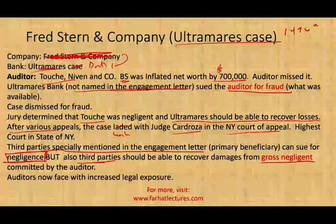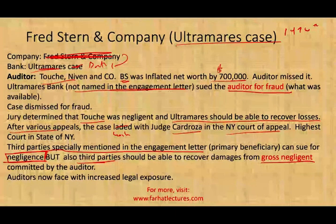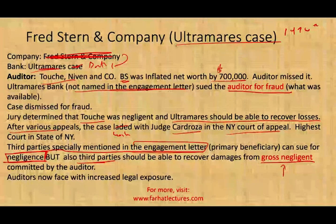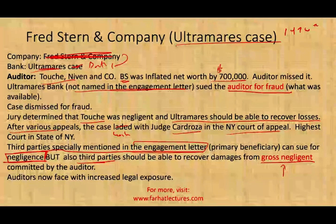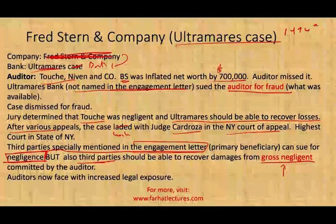This is an example of how common law evolves. After the Ultramaris case, auditors started to face increased legal exposure. Before this ruling, third parties could only sue for fraud. Now, primary beneficiaries can sue for negligence and foreseen users can sue for gross negligence. Hopefully this case gives you an idea of how common law works — it's not complicated, but it's not straightforward either.